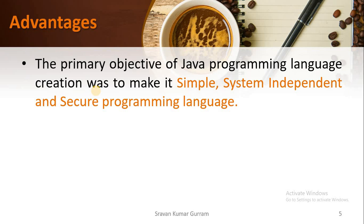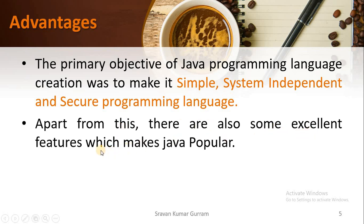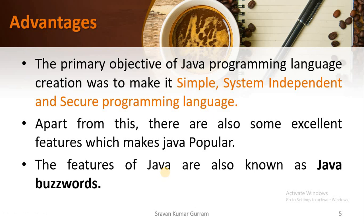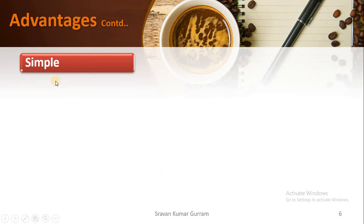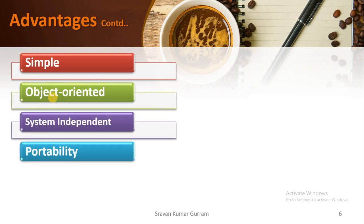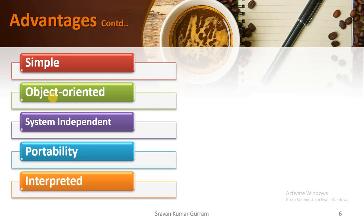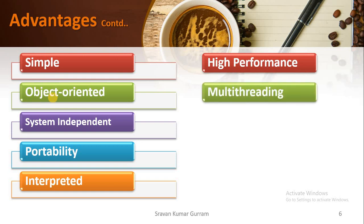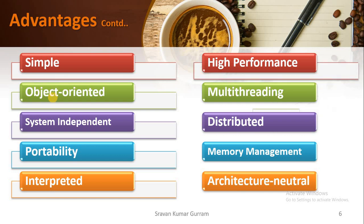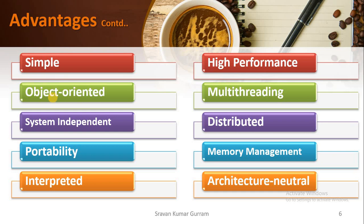The primary objective of Java programming language creation was to make this language simple, system independent, and a secure programming language. These are the main goals to develop Java. Other than these main goals, there are so many excellent features in Java which make Java popular. These features of Java are also called Java buzzwords: simple, object oriented, system independent or platform independent, portability, interpreted, high performance, multi-threading, distributed, memory management, and architecture-neutral.